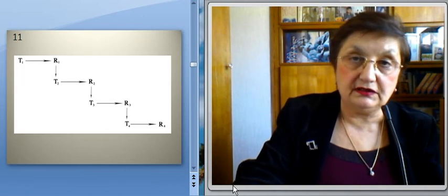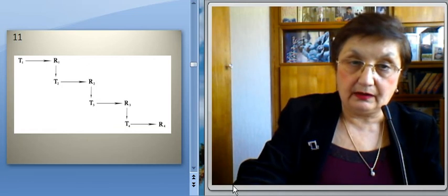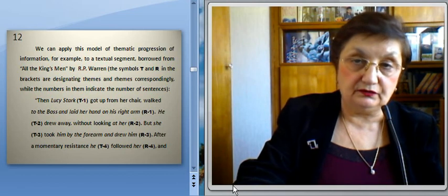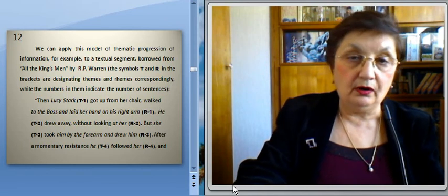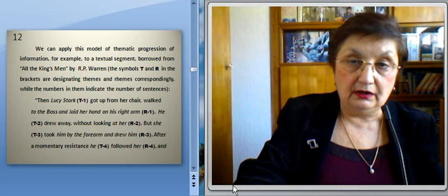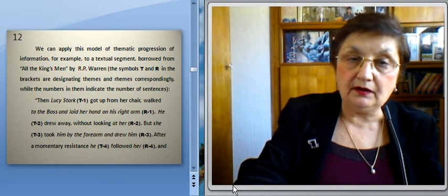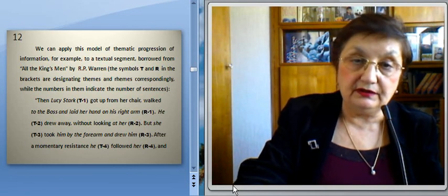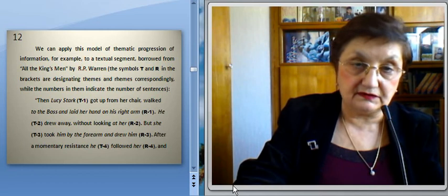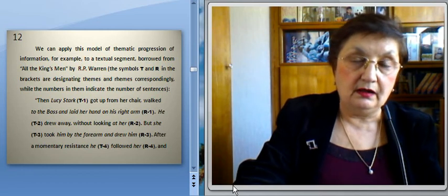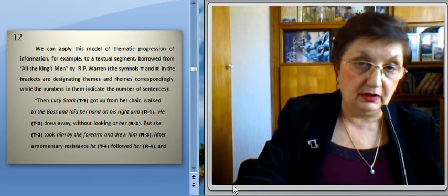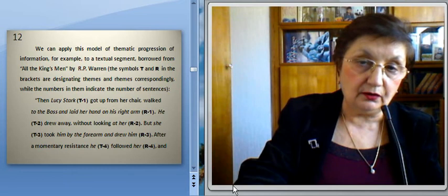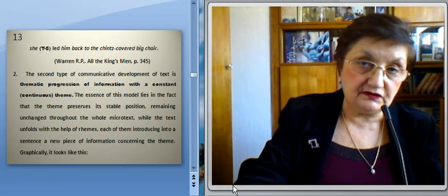We can apply this model of semantic progression of information to a textual segment borrowed from All the King's Men by Warren. The symbols T and R in brackets designate themes and rhemes correspondingly, while the numbers indicate the number of sentences. Let's read the text: 'Then Lucy Stone got up from her chair, walked to the boss, and laid her hand on his lighter. He drew away without looking at her. After a moment of resistance, he followed her, and she led him back to the chintz-covered big chair.'